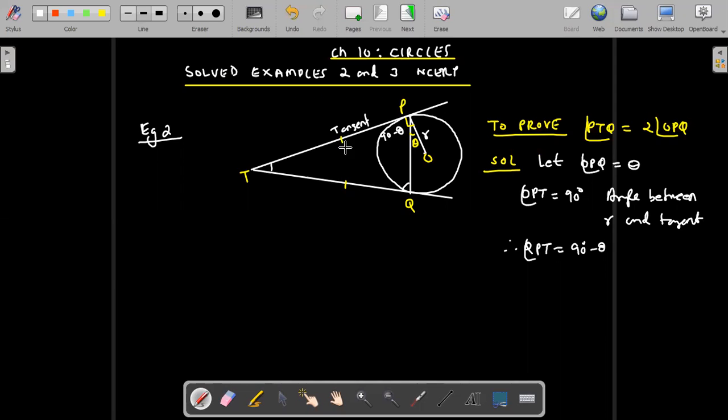Now you have studied in class 9 that if sides of a triangle are equal, two sides are equal, the angles opposite to them will be equal. So if this is 90 minus theta, this will also be 90 minus theta. So TP and TQ are equal because they are tangents drawn from the same external point to a circle.